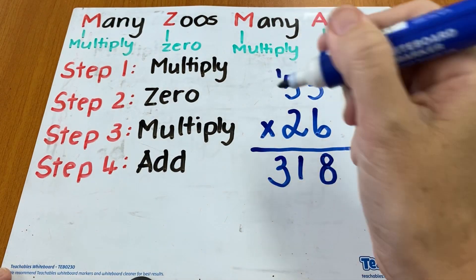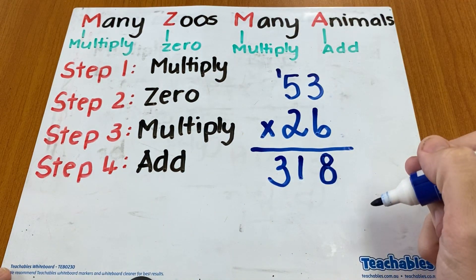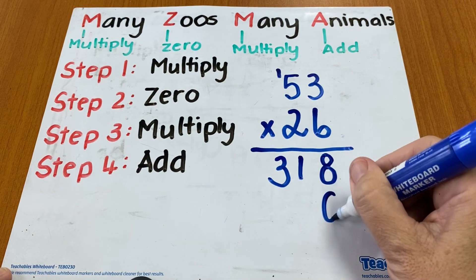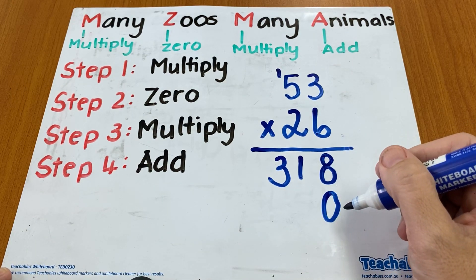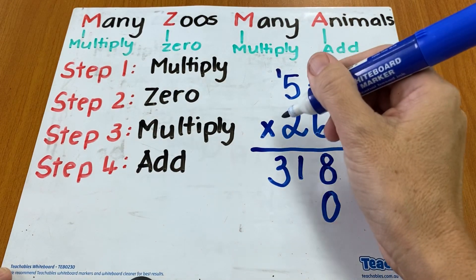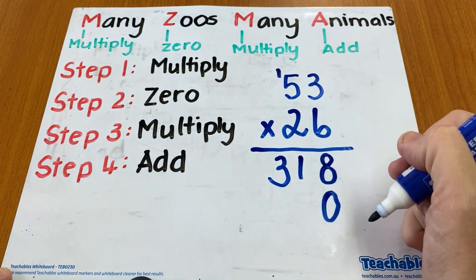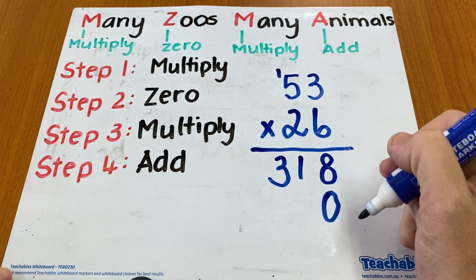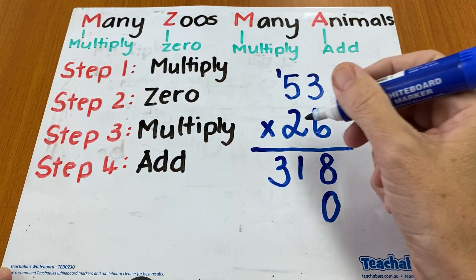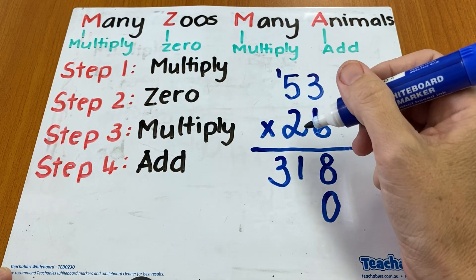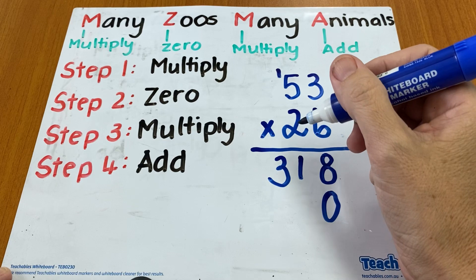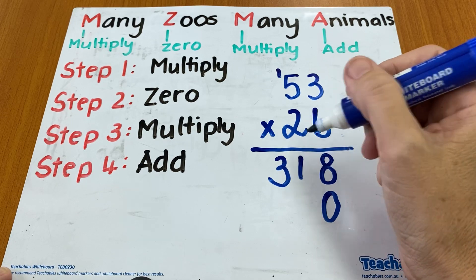Step two is adding a zero. I place that here, and that is because we are now moving into the tens place value, because as you can see I'm now multiplying the twenties.